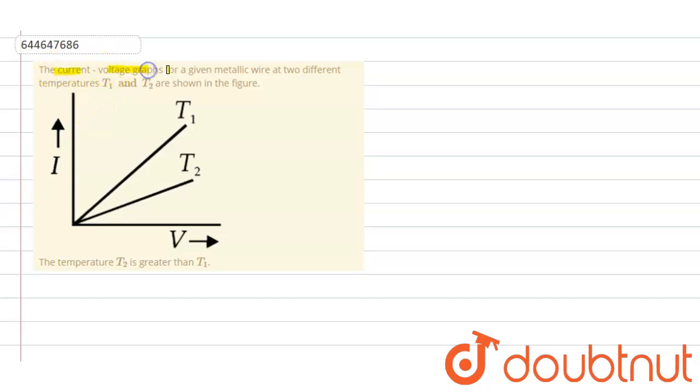The current-voltage graph for a given metallic wire at two different temperatures T1 and T2 are shown in the figure. And it is written the temperature T2 is greater than T1. So yes, this statement is correct. Temperature T2 is greater than T1. This statement is true.